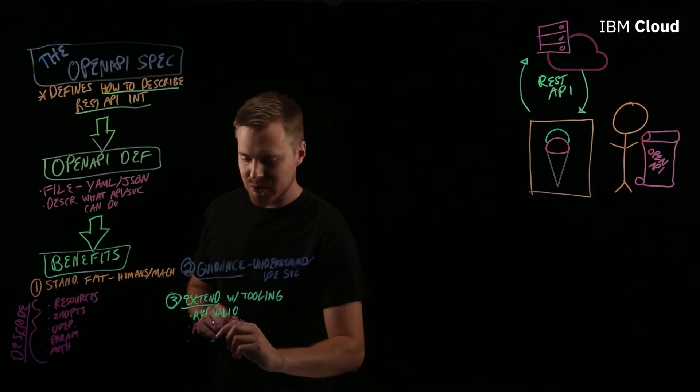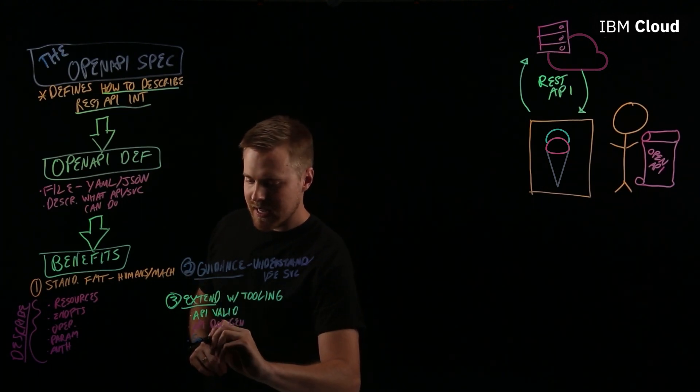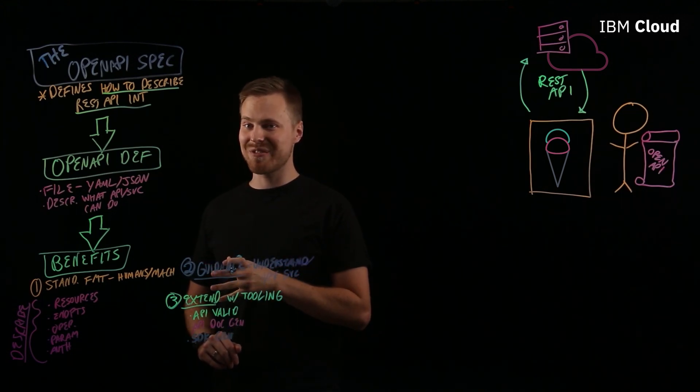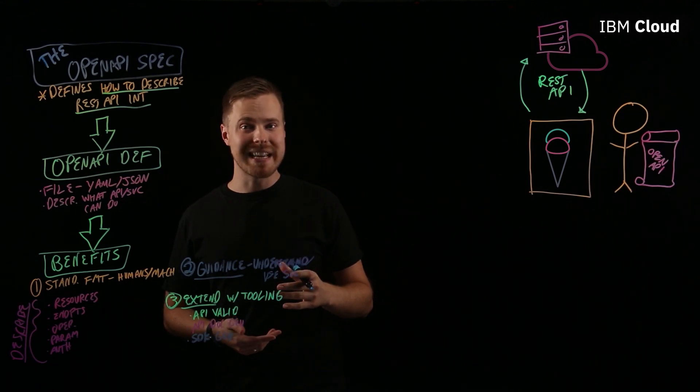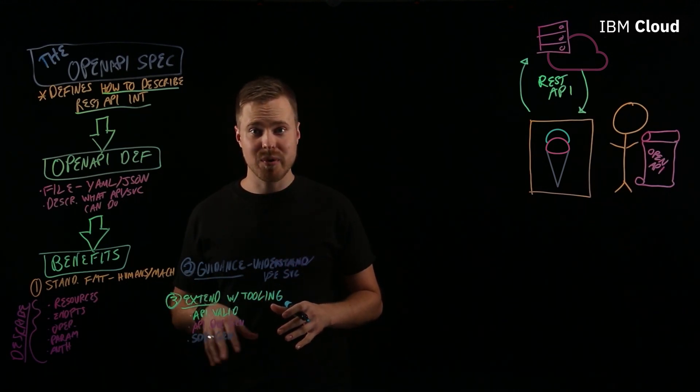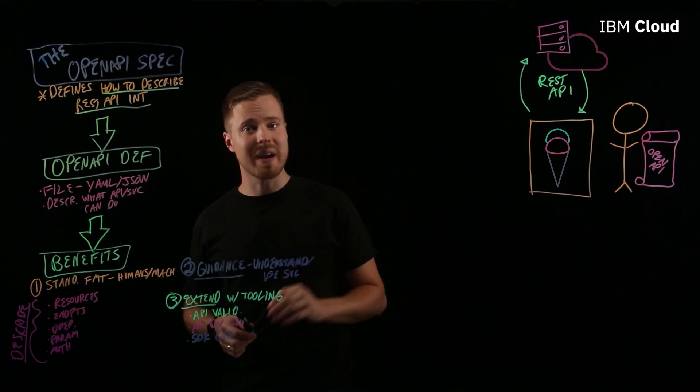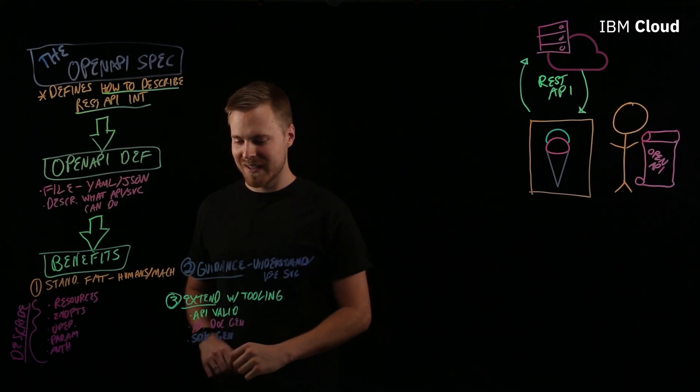Another example of tooling is an SDK generator, which will once again take in the OpenAPI definition and the output will be client libraries in the programming language of your choice or SDKs, so you can actually consume that REST API.